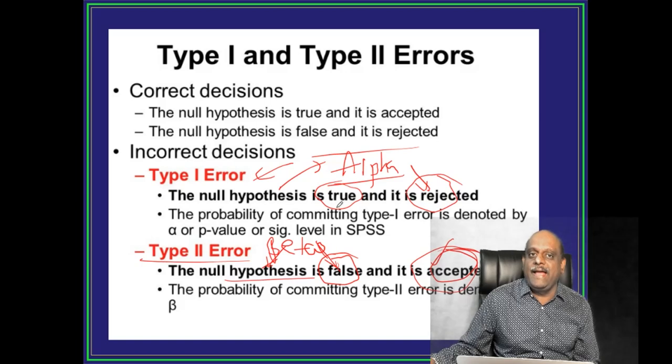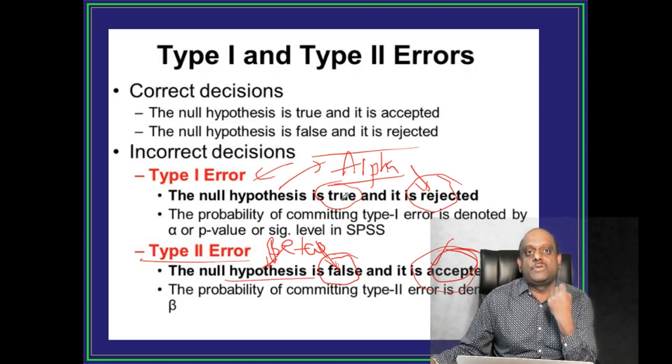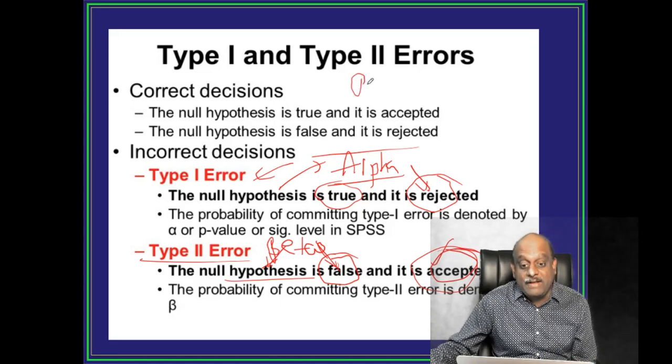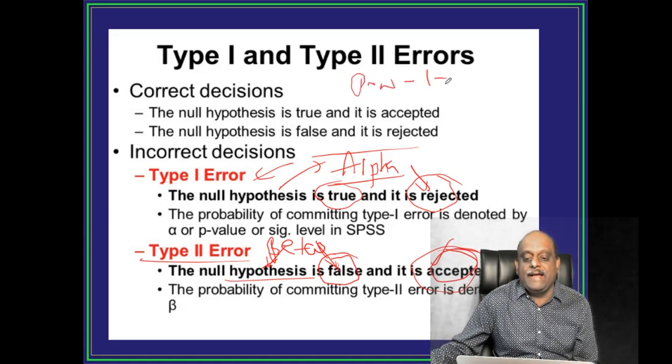And Duryodhan kis ke liye, kis ko cheen diya, power ko cheen diya, blind king se. So power is equal to 1 minus beta error.